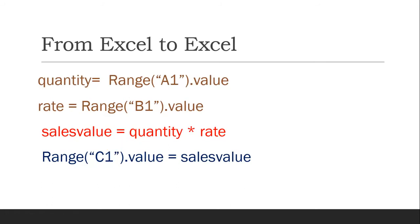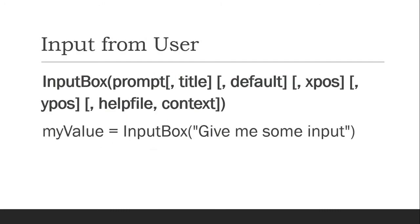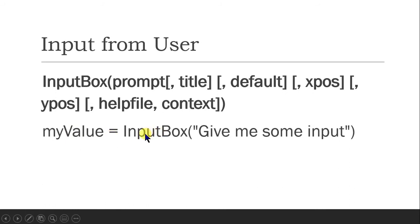Now what we need to do is take input from the user. There is a special command called InputBox. InputBox will store the value in a variable — right side value goes into left side. So we say: my_value = InputBox("give me some input"). This means we use InputBox and give a prompt to the user, such as 'Please tell your income' or 'Please tell your name.' Whatever we want to print is given as the prompt to InputBox.